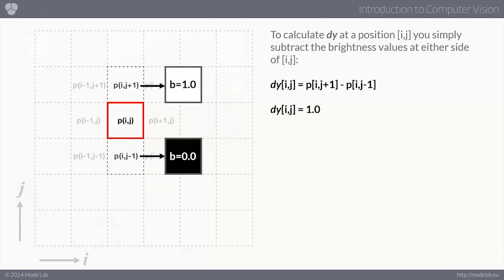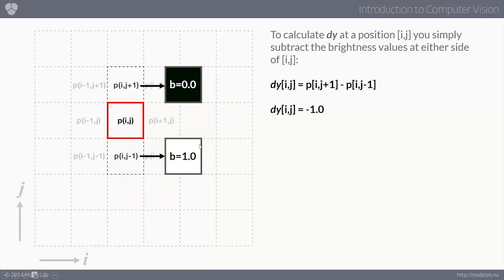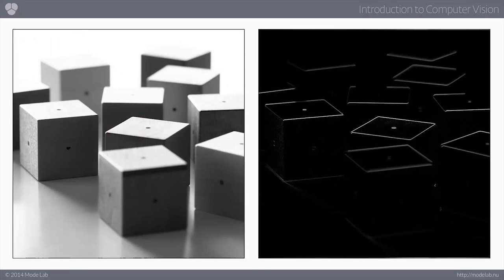We can do the same thing to calculate the derivative along the y-axis. This time we take the pixel on the top and subtract the pixel on the bottom. One minus zero gives a derivative of one. If the two pixels are the same — whether zero or 0.5 — the derivative is zero. Going from dark to white gives negative one. You can choose to clamp at zero or take the absolute value. The dy begins to tell us about the horizontal edges.